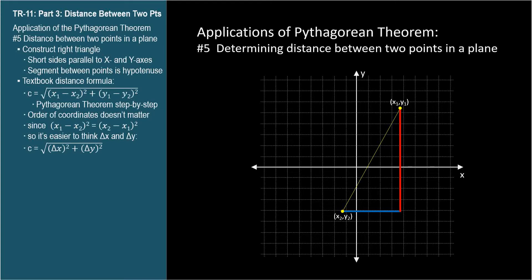Since the new lines are perpendicular, the triangle is a right triangle, and we can apply the Pythagorean Theorem. We'll label the sides a, b, and c, with c as the hypotenuse, whose length we want to find.